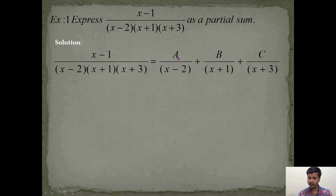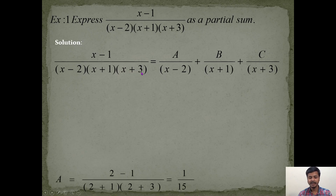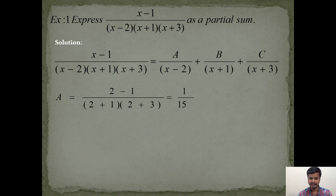To find the value of A, look at the factor x − 2, which gives x = 2. Substitute x = 2 in the left-hand side while covering the factor (x − 2). So we get (2 − 1) / [(2 + 1)(2 + 3)], which gives A = 1/15.